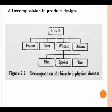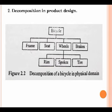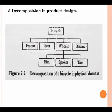For example, a bicycle can be divided into frame, seat, wheels, and brakes. Within wheels, you have rim, spokes, and tire. Dividing the design problem of a product into simpler sub-problems is called decomposition. Further, even smaller tasks may be divided again — a whole assembly breaks into parts, and those parts may be divided further into sub-components, each studied in detail.